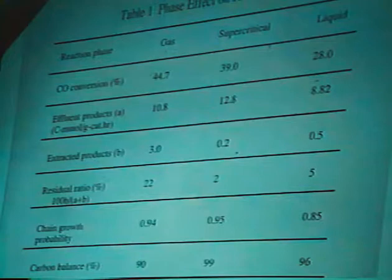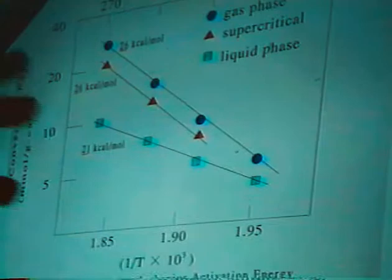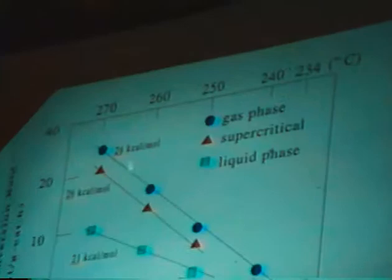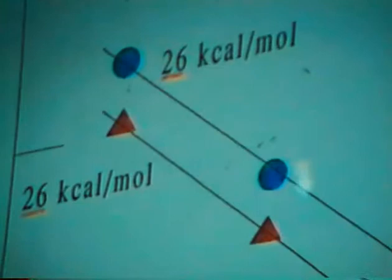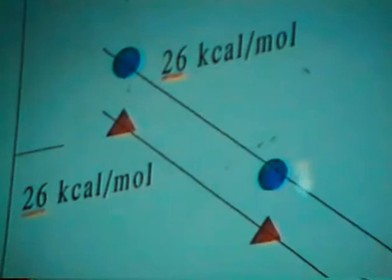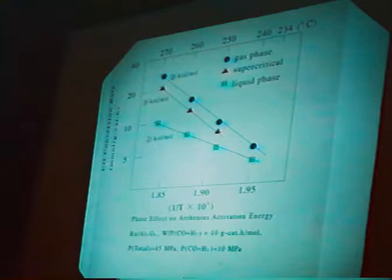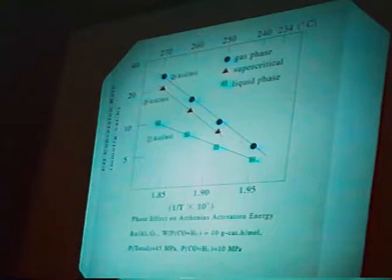In this figure, it is shown the phase effect on apparent activation energy for the three reaction phases respectively. The catalyst activity of supercritical phase reaction is close to that of gas phase reaction, and the apparent activation energy of them is the same. But in the case of liquid phase reaction, the apparent activation energy is very low. This should be attributed to the low diffusion rate of synthesis gas in the liquid phase reaction, because the intrinsic activation energy of the diffusion process inside the catalyst is very low, limiting the total overall activation energy.